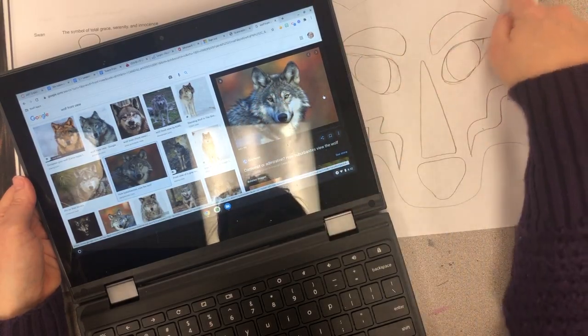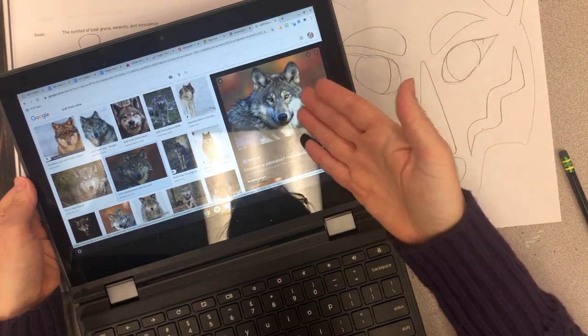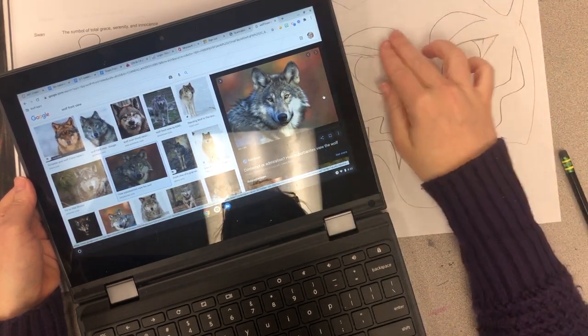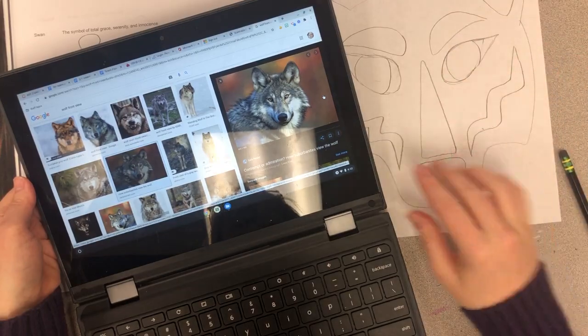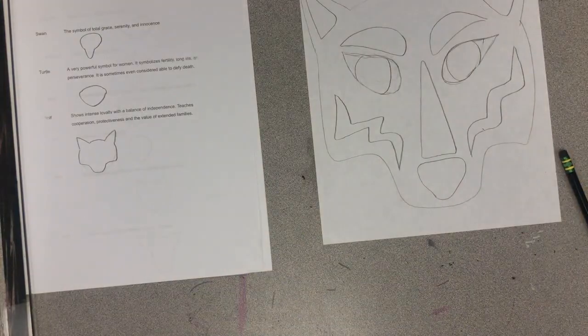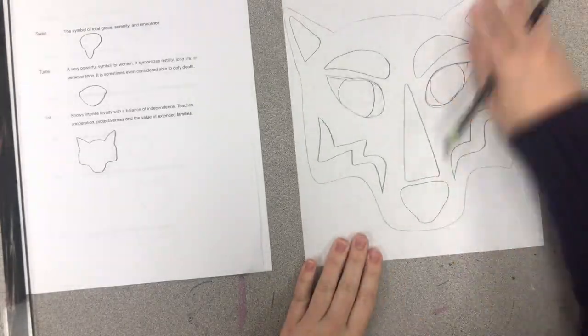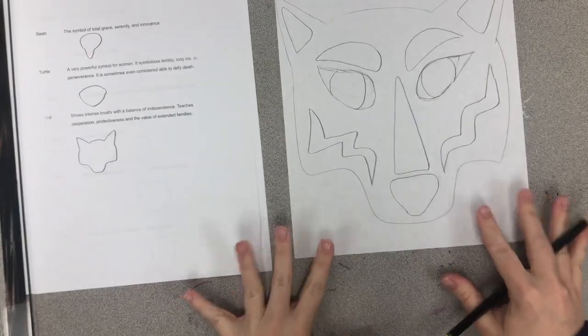I noticed that the markings around his eyes kind of go in that shape and then the shape for his ears. So I'm looking and I'm not drawing exactly what I see, but I'm mimicking some of those shapes and patterns so that I can see when I'm looking at the wolf.